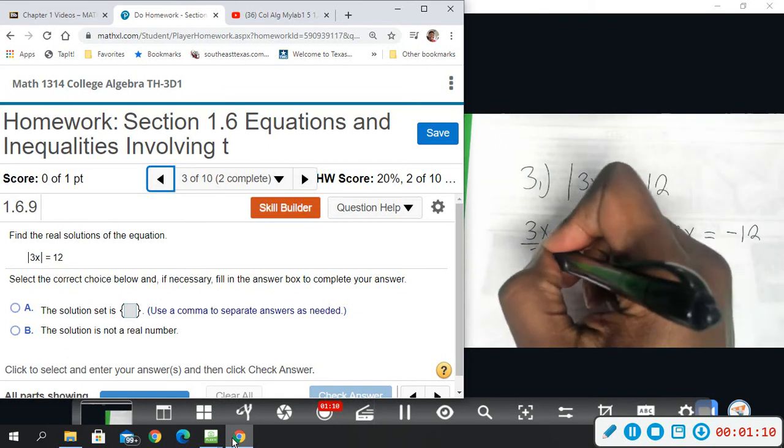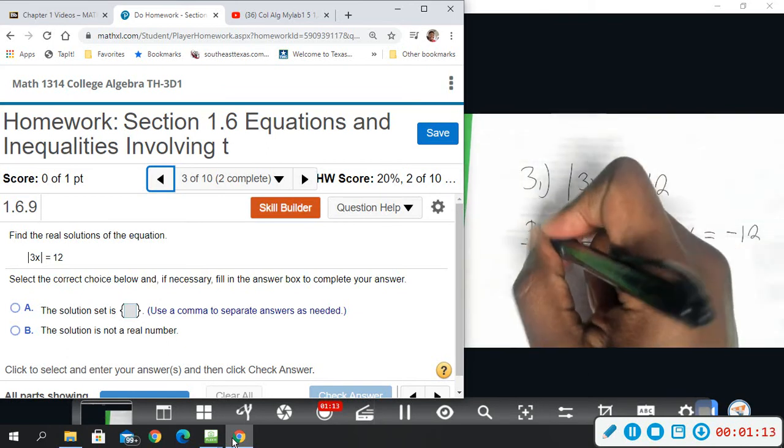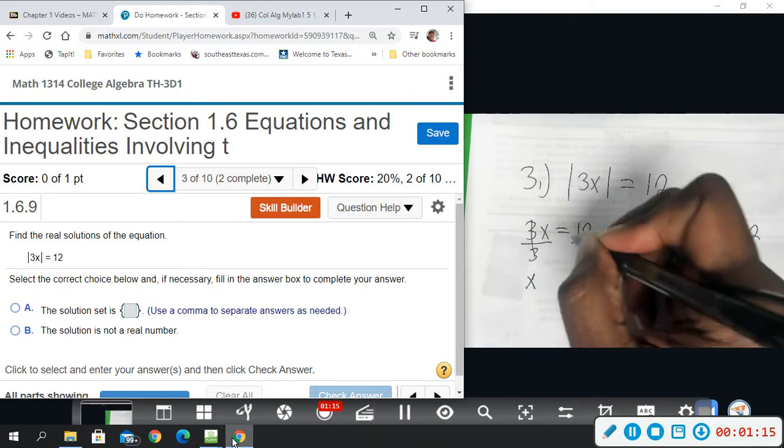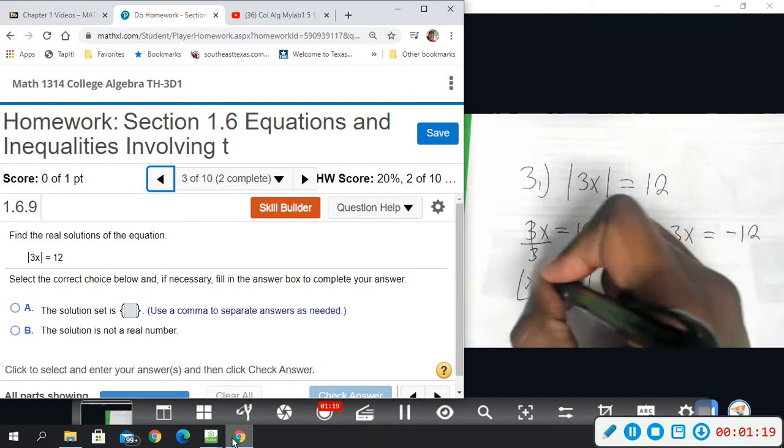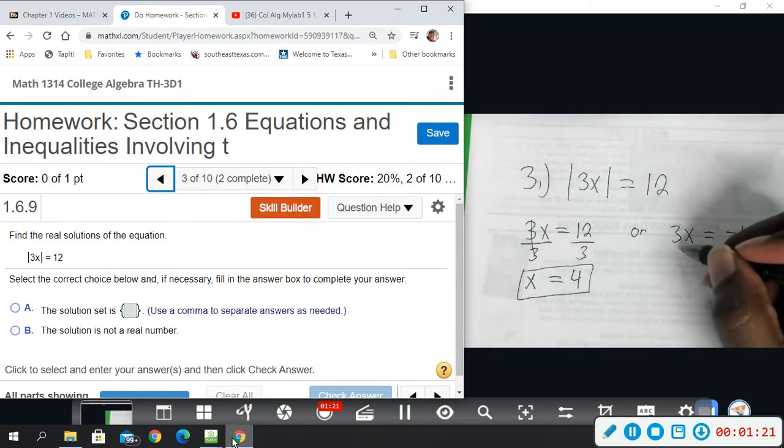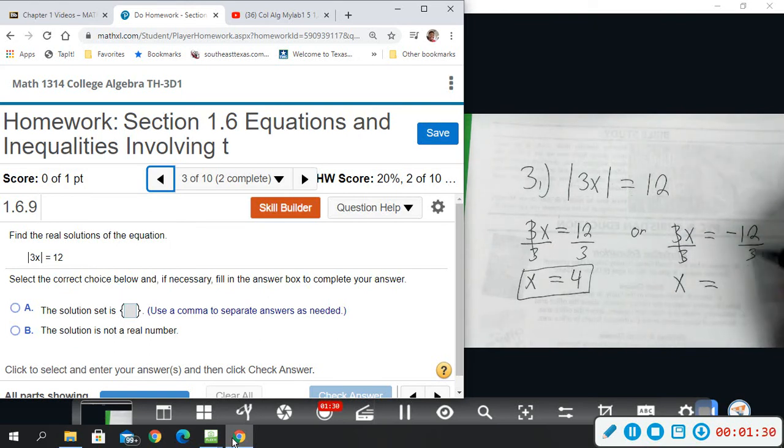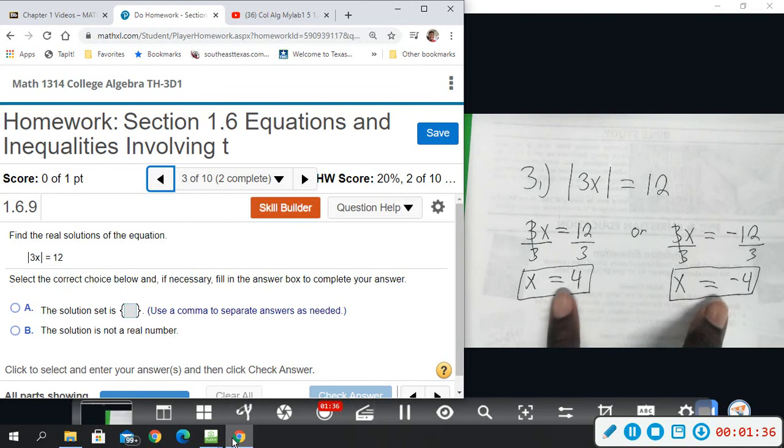Then we solve. We divide by 3 on both sides. 3 divided by 3 is 1, so we have x equals 4. This is one possibility. And then over here we would do the same thing. Divide by 3 on both sides, 3 divided by 3 is 1, we have x equals negative 4.